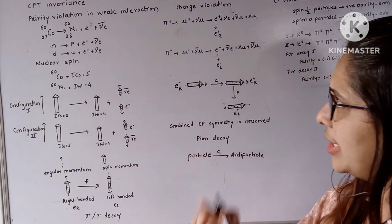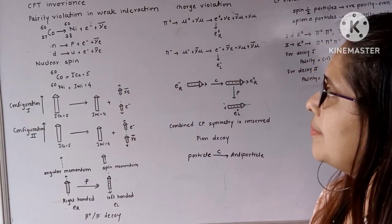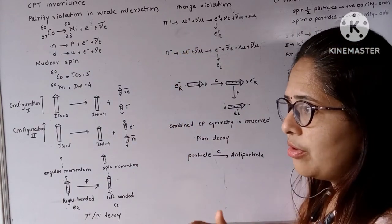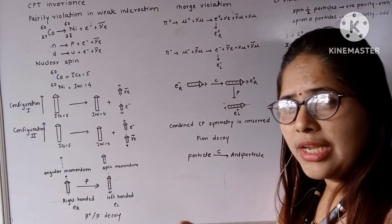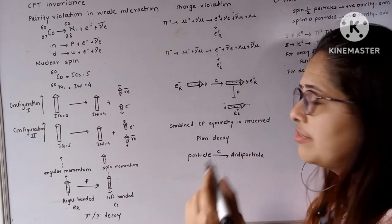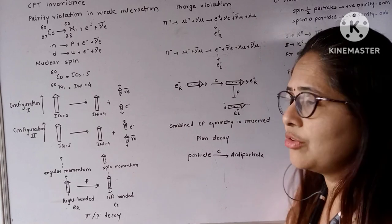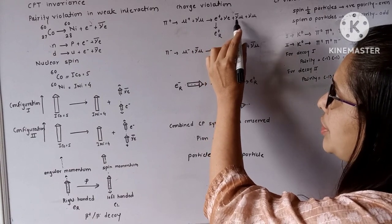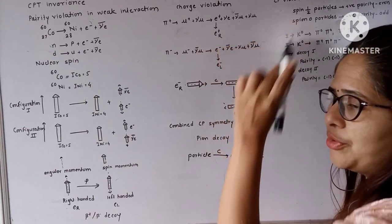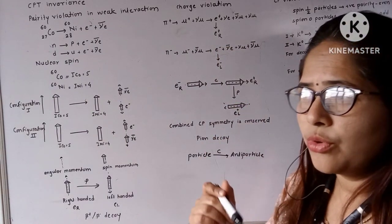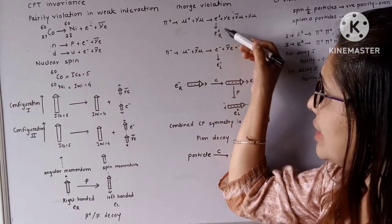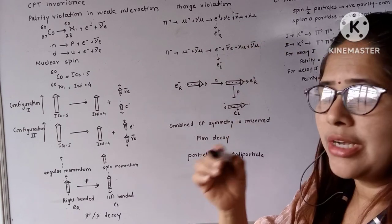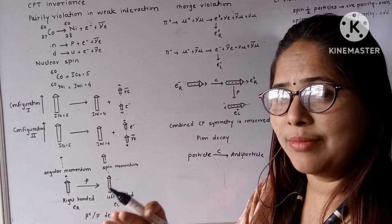We take the example of pi-plus decay. The pi-plus decays into mu-plus and a muon neutrino. At very high kinetic energies — mega electron volts — the muon again decays into a positron, a positron neutrino, and a muon anti-neutrino, along with the muon neutrino. The positron found here is always right-handed, meaning its angular momentum and spin are both in the same direction.